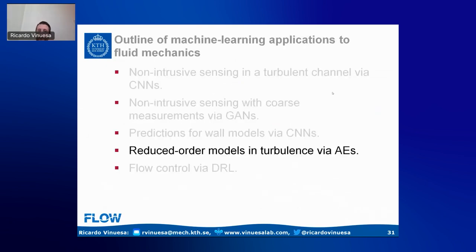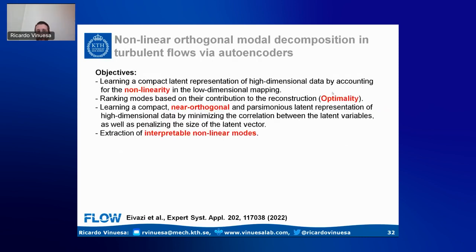Now we turn to reduced-order models in turbulence using autoencoders. When building a reduced-order model, proper orthogonal decomposition comes to mind quickly. POD is optimal and produces orthogonal modes. The idea is to use autoencoders to obtain a non-linear model decomposition which is much more compact than a linear one, while retaining the properties of optimality and orthogonality. All details are published this year in Expert Systems with Applications — work by Hamid Eivazi and others.